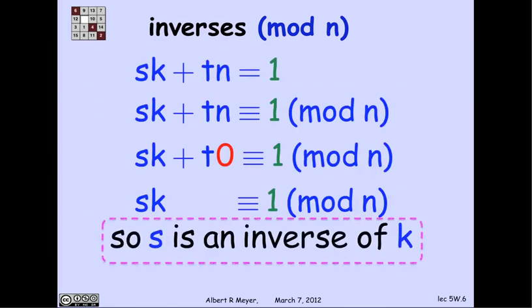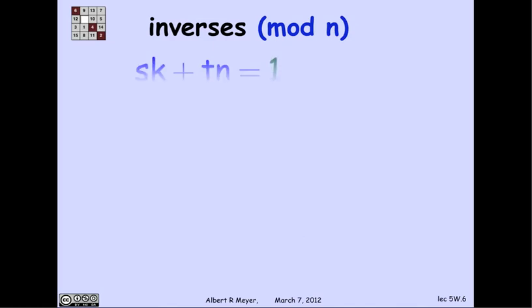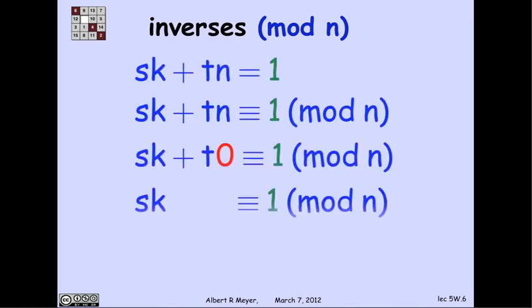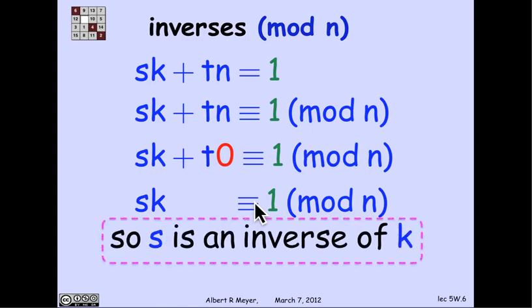Let's look at that slightly more carefully and see what's going on. I have that sk plus tn is 1. So that means, in particular, since they're equal, they're certainly congruent to each other modulo n. sk plus tn is congruent to 1 mod n. But n is congruent to 0 mod n. So this becomes t times 0. And we're left with sk congruent to 1 mod n, which is exactly the definition of s being an inverse of k.